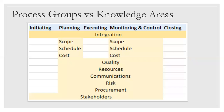This slide is very important — take a screenshot. It shows which knowledge areas cut across which process groups. In planning, you can see integration goes through all of them. Apart from integration, in planning we have scope, schedule, cost, quality, resource, communication, risk, procurement, and stakeholders. All of them fall under planning, and each needs some time to understand.